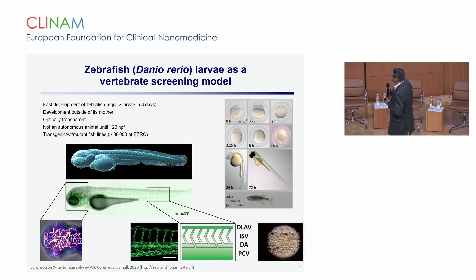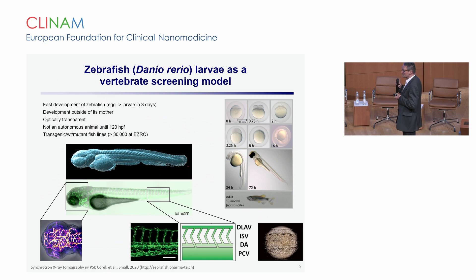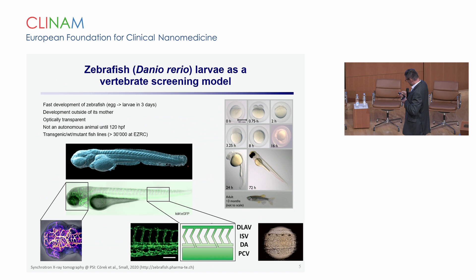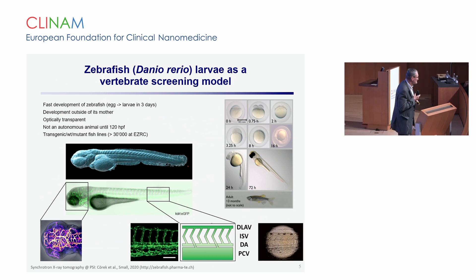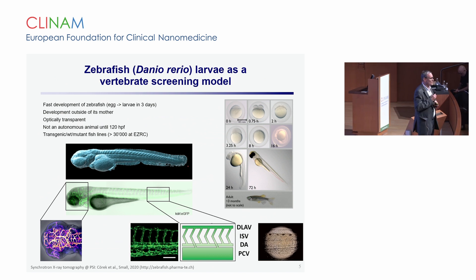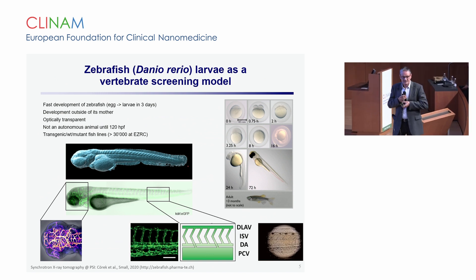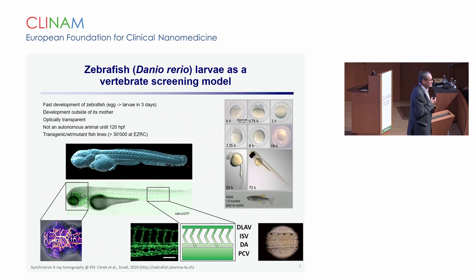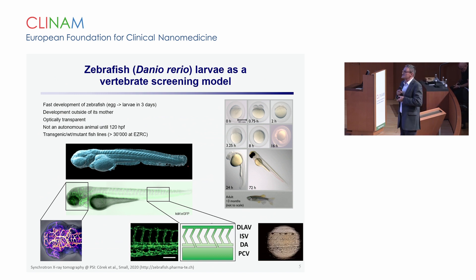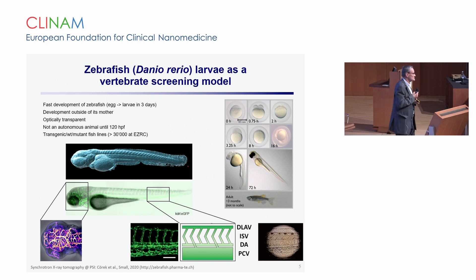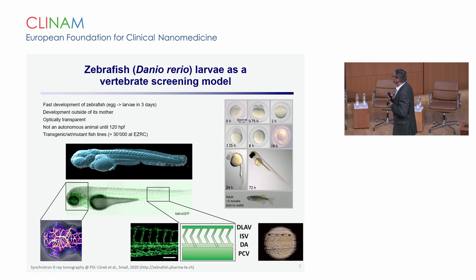Why zebrafish? Zebrafish is a small tropical freshwater fish, characterized by rapid development of the embryo from the fertilized egg to a small larva within three days. The larvae hatching from the small eggs have a size of about one to two millimeters. They are very small and transparent, which lends them to analysis by optical methods. These small larvae are fully developed organisms — they have a fully developed nervous system, a fully established blood-brain barrier, a closed vascular system, and functioning pronephrons, the analogs of the kidneys.